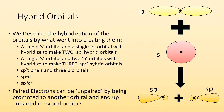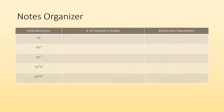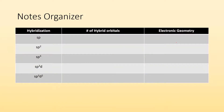Paired electrons can also be unpaired by being promoted to another orbital and end up unpaired in hybrid orbitals. Basically, even if you have paired electrons and you're hybridizing them, they might not stay paired. Here's a notes organizer that might help you: it has hybridization in one column, number of hybrid orbitals in another, and then electronic geometry.